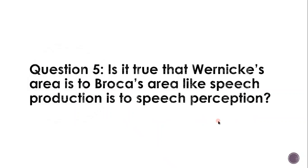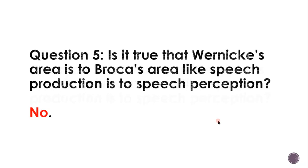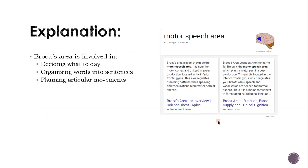Question five. Is it true that Wernicke's area is to Broca's area like speech production is to speech perception? The answer is no. Broca's area is involved in deciding what to say, organising words into sentences, and planning articulatory movements. Broca's area is known as the motor speech area — it is near the motor cortex and is utilised in speech production, located in the inferior frontal gyrus. This area regulates breathing patterns while speaking, and vocalisation is required for normal speech.